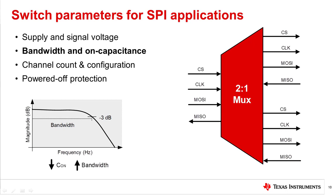SPI does not have one specific data rate, so the switch bandwidth required is determined by your system components. The recommended MUX bandwidth is three times the clock frequency. Lower C-on and higher bandwidth switches are critical in systems where board layout or connectors add extra capacitance.